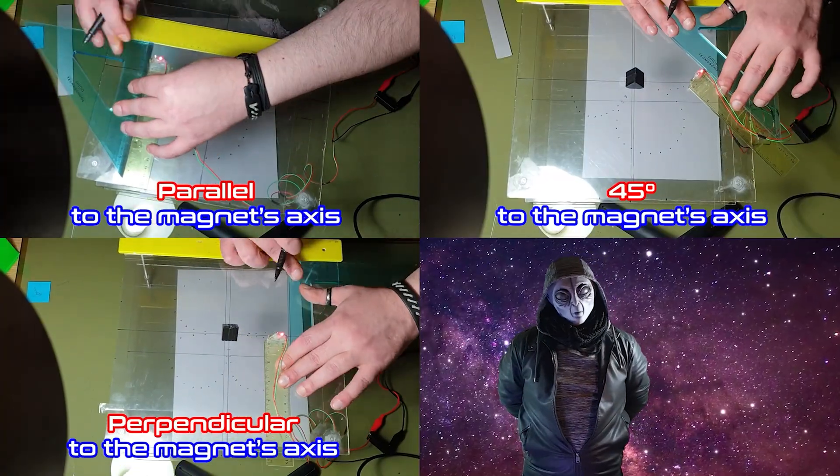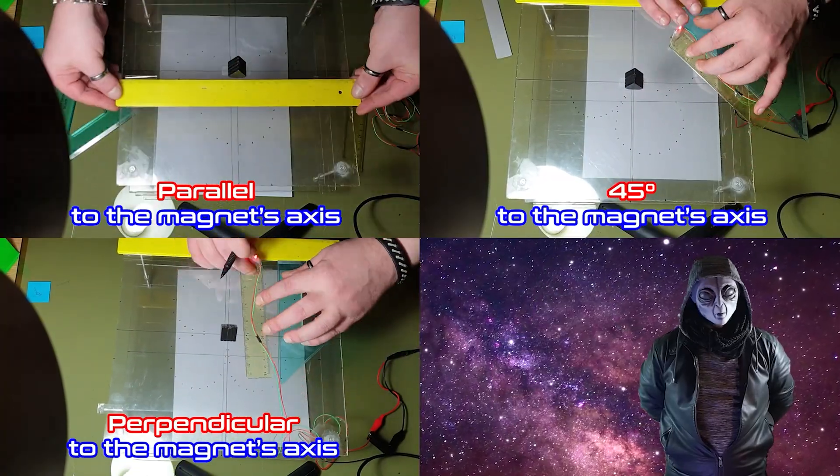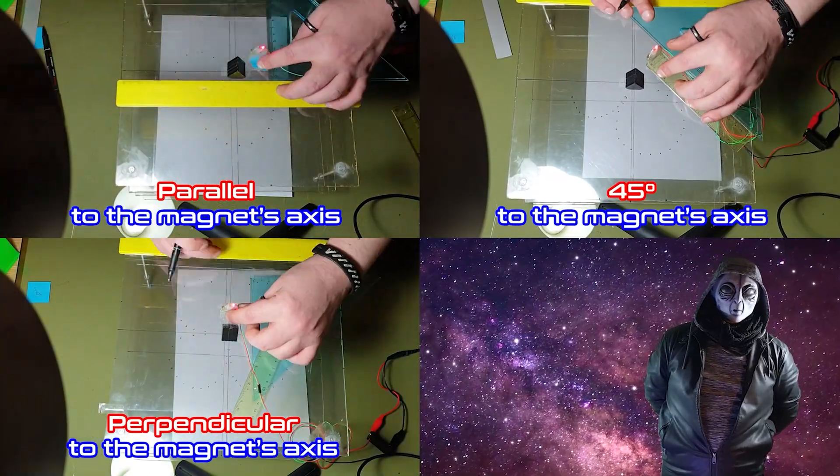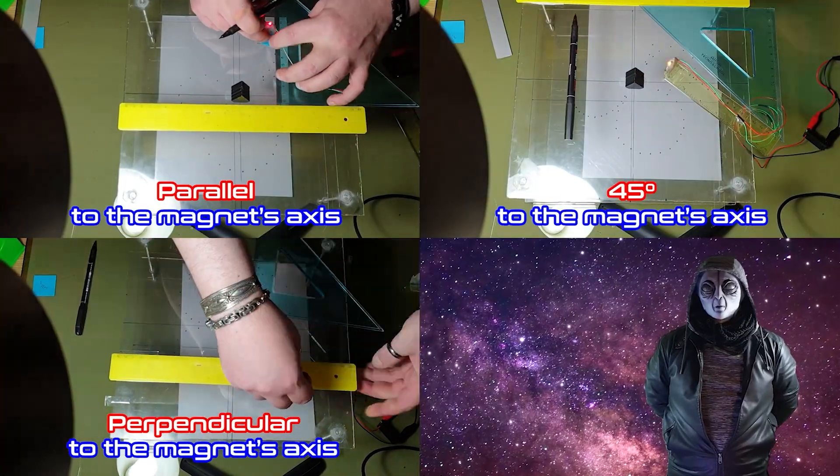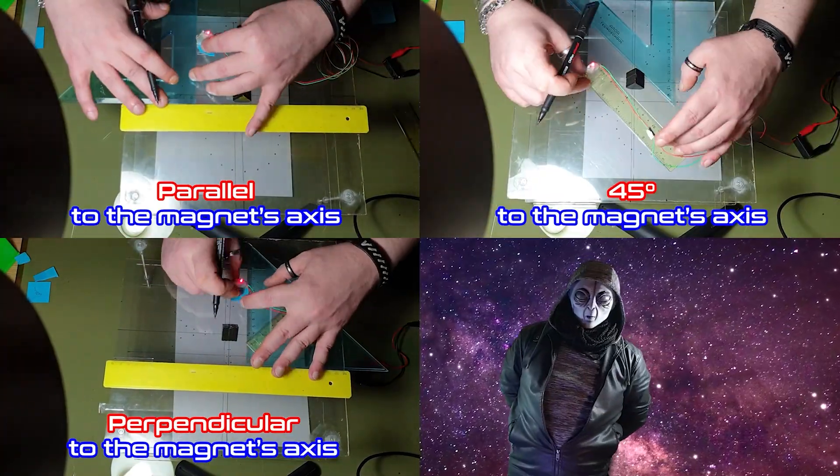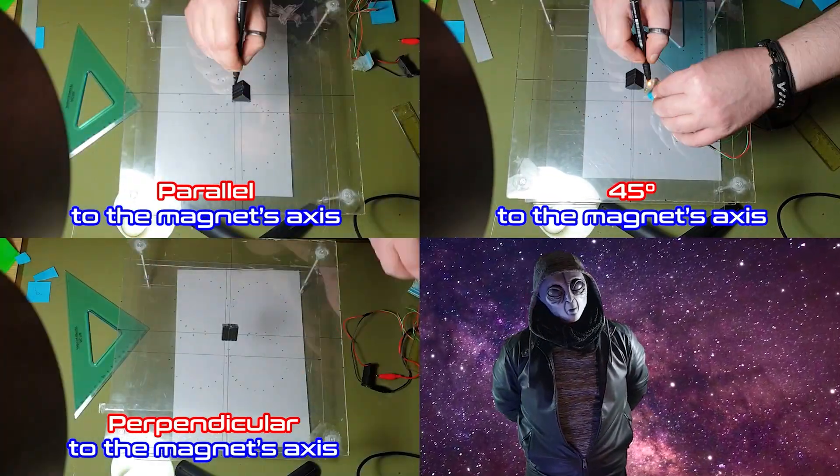Instead, it reveals itself as a set of dynamic, coherent structures that change depending on how we observe them. In other words, the measurement itself is part of the phenomenon. And this brings us to the first type of entanglement Marcio proposes.